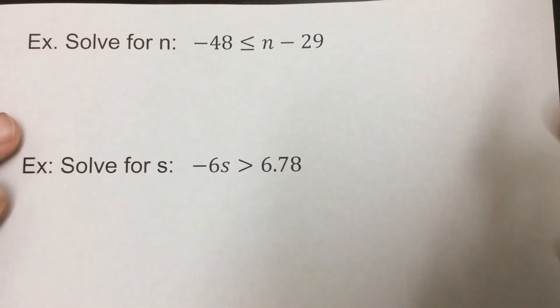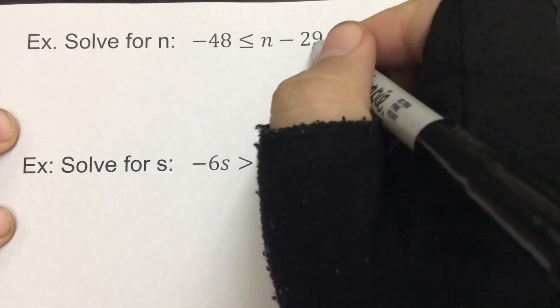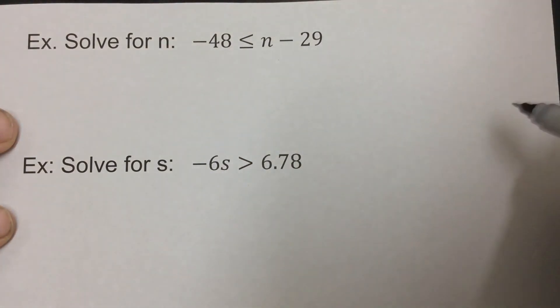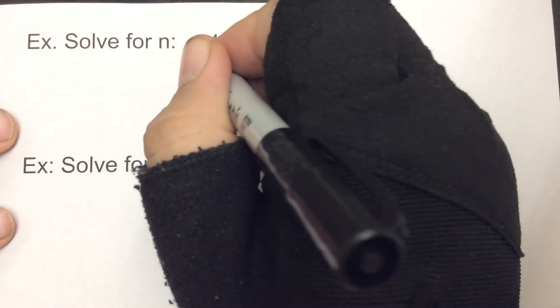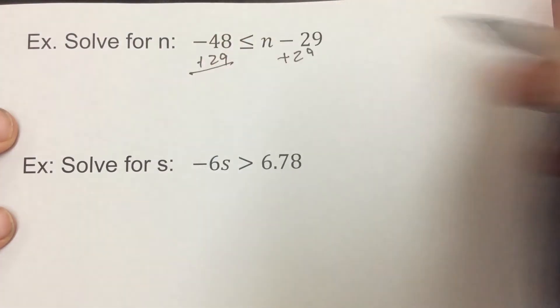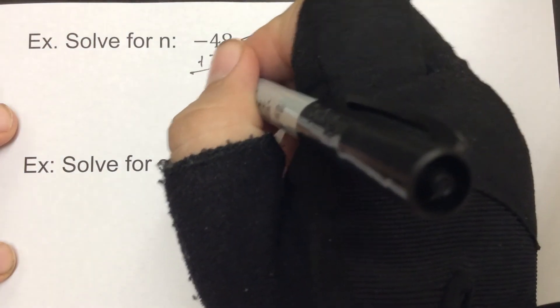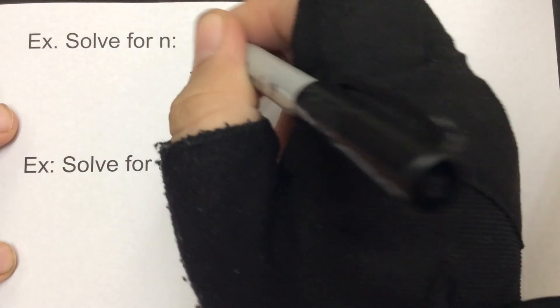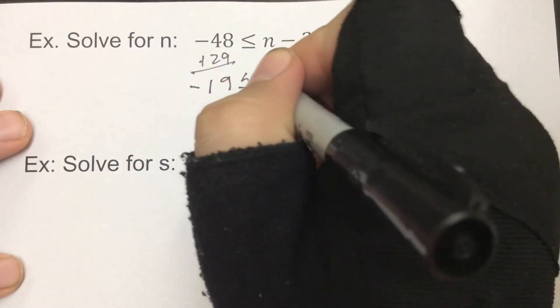These here: we have negative 48 less than or equal to n minus 29. So opposite of minus is to add 29. Now remember, when they're different signs, we actually subtract them. So we would get 19, but the bigger one was negative, so our answer will be negative. And we're less than or equal to n.